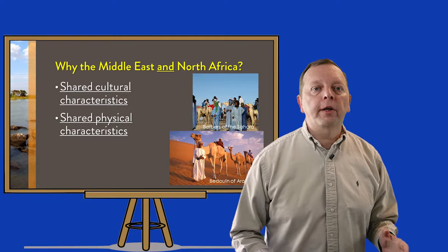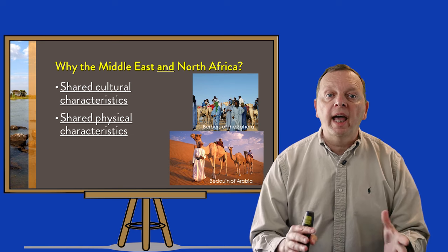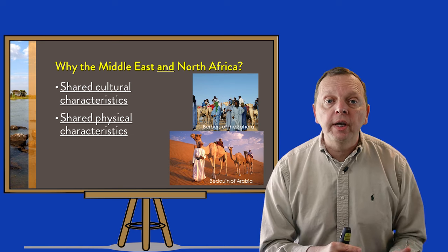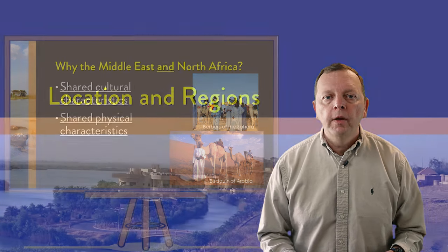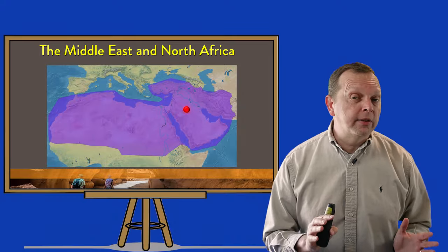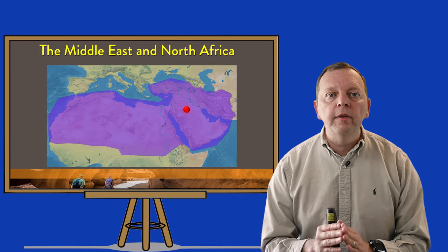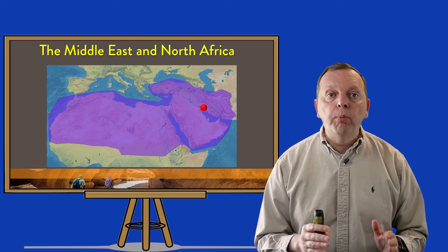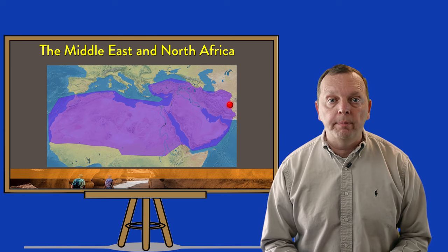The Middle East and North Africa are often combined as one region as they not only have shared cultural characteristics, but they have similar physical characteristics as well. The Middle East, also known as Southwest Asia, is a region found to the east of the Mediterranean Sea and extends eastward to the border between Iran and the two countries of Afghanistan and Pakistan.